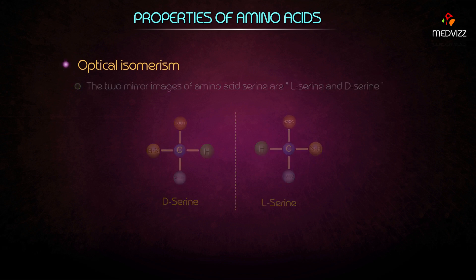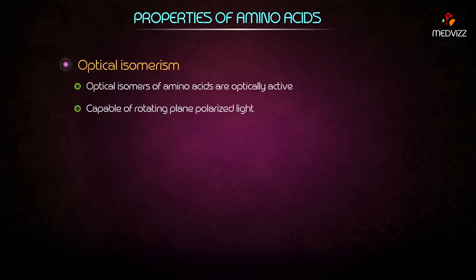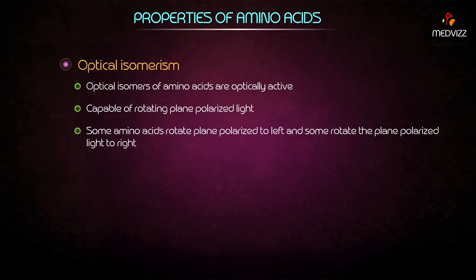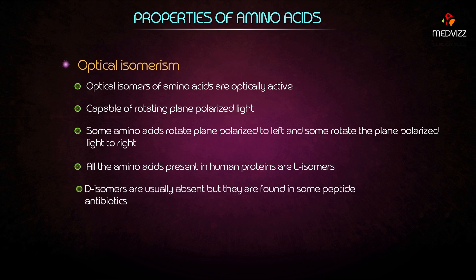The optical isomers of amino acids are optically active — they are capable of rotating plane-polarized light. Some amino acids rotate plane-polarized light to the left and some rotate it to the right. All amino acids present in human proteins are L-isomers.